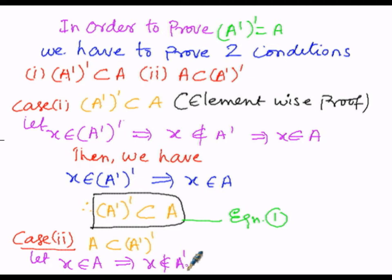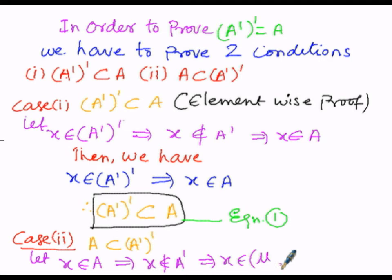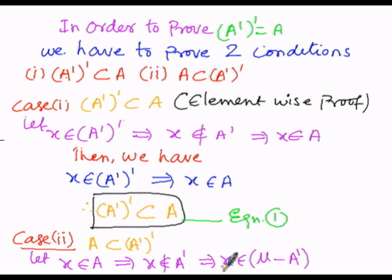Since A is a subset of the universal set μ, and x belongs to A, x will definitely be present in the universal set. So the next logical step is: x belongs to μ but x does not belong to A'. Since we have subtracted A' from the universal set, x exists in μ but not in A'. Therefore, we can write x belongs to μ minus A'.